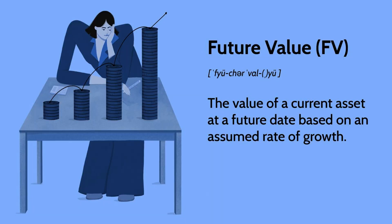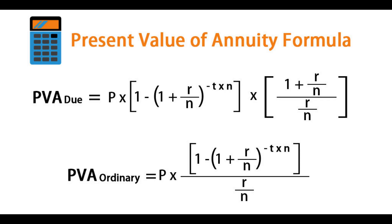The result is PMT equals two hundred ninety-five dollars and twenty-four cents. Therefore, the regular monthly payments required to repay the ten thousand dollar loan over three years at a monthly interest rate of 0.4167 percent would be two hundred ninety-five dollars and twenty-four cents. In conclusion, PMT is an important financial formula used to calculate the regular payments required to repay a loan or achieve an investment goal.